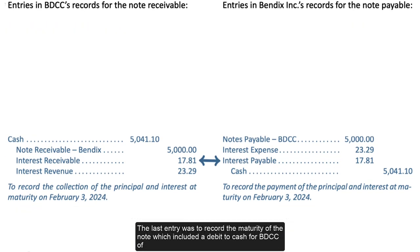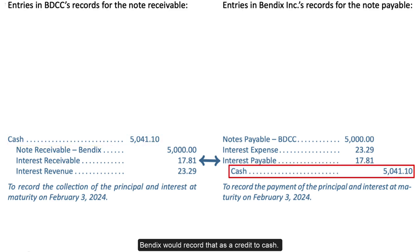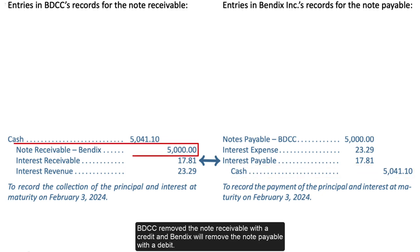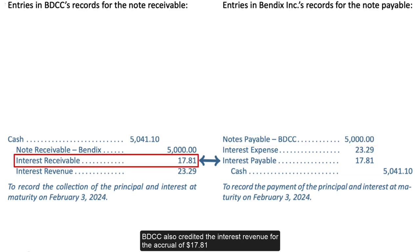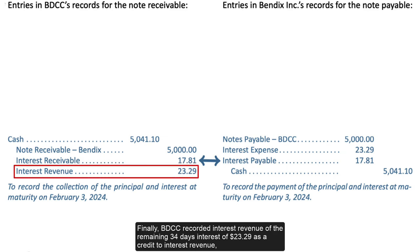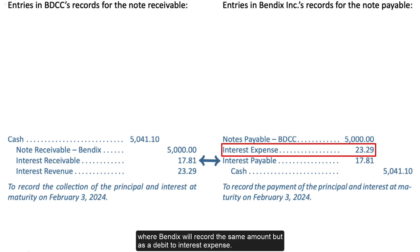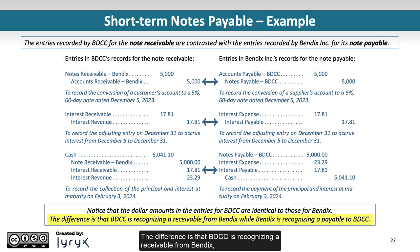The last entry records the maturity of the note. BDCC debits cash for $5,041.10, which includes the full principal plus 60 days of interest. Bendix records that as a credit to cash. BDCC removes the note receivable with a credit, and Bendix removes the note payable with a debit. BDCC also credits interest revenue for the accrual of $17.81, and Bendix debits interest payable for the same amount. Finally, BDCC records the remaining 34 days of interest revenue of $23.29 as a credit to interest revenue, while Bendix records the same amount as a debit to interest expense. Notice that the dollar amounts in the entries for BDCC are identical to those for Bendix — the difference is that BDCC recognizes a receivable from Bendix, while Bendix recognizes a payable to BDCC.